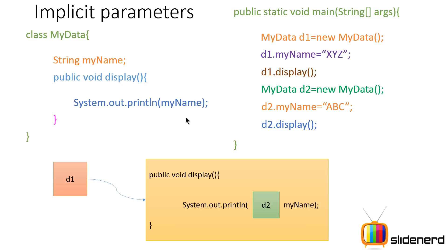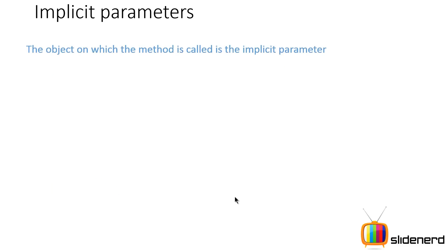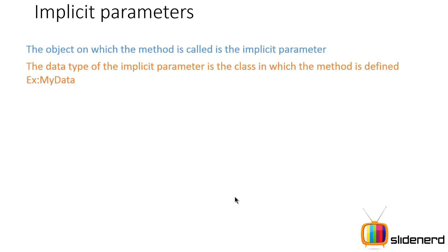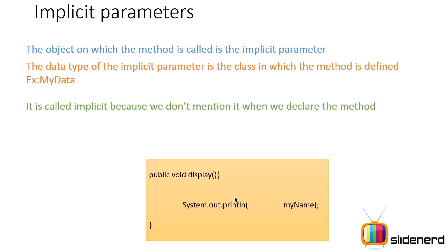This is very closely related to the 'this' keyword, which we will discuss in upcoming videos. Here are the key things to remember: first, the object on which the method is called is the implicit parameter. Second, the data type of the implicit parameter is the class in which the method is defined. It is called implicit because we don't declare it when we declare the method. For example, 'd1' in 'd1.display()' is the implicit parameter, and its data type is MyData.